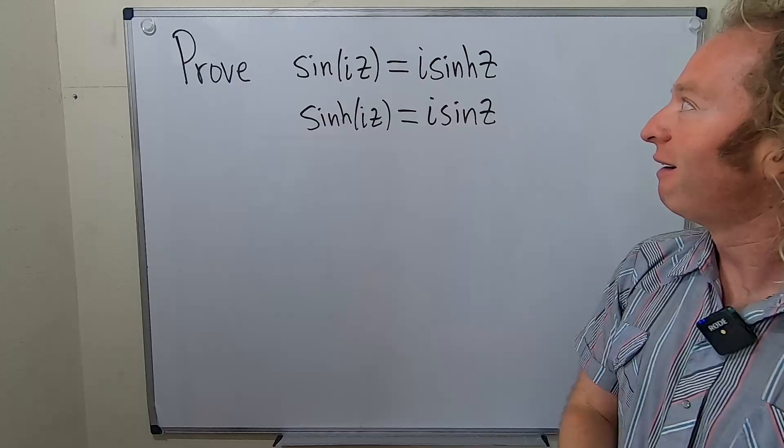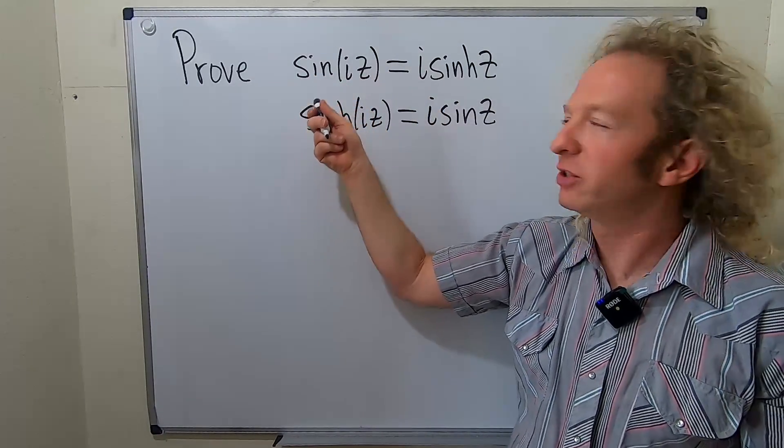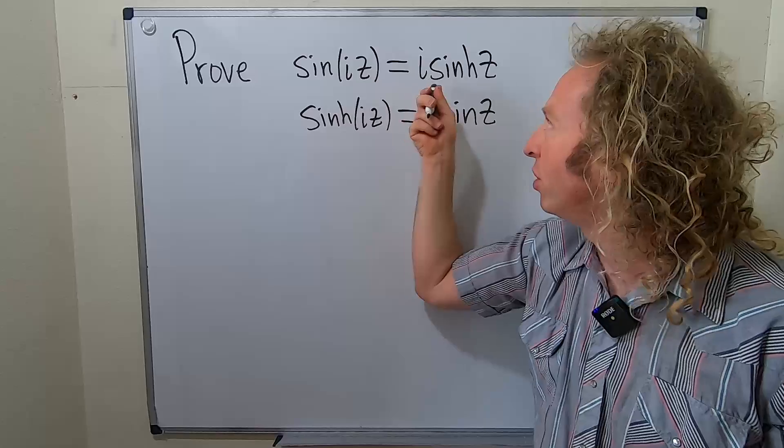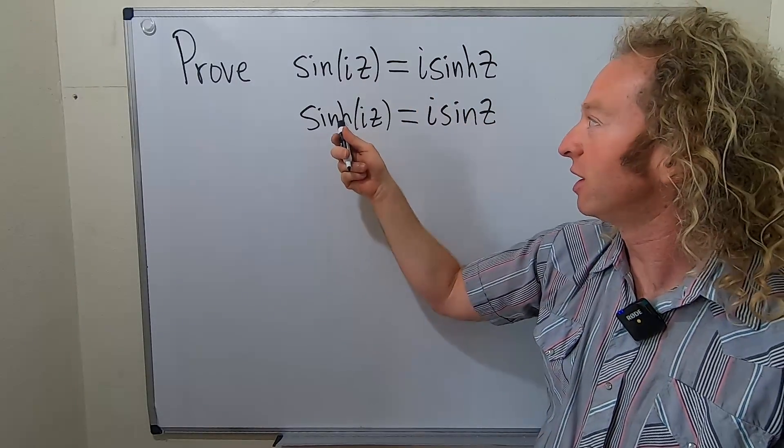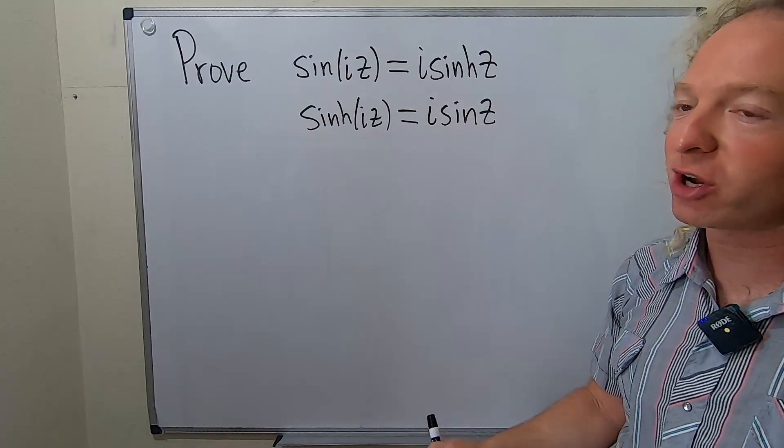This relates the complex sine function to the complex hyperbolic sine function. Both of these do. So it's an interesting relationship. It's almost like you can factor out the i and you get the other one. So sine of iz and then you can pull it out. It's really cool. And sinh of iz, you can pull it out and get that.